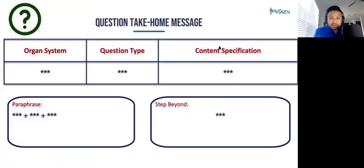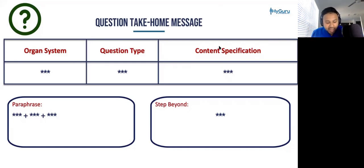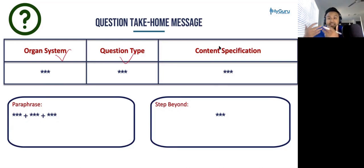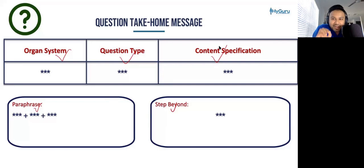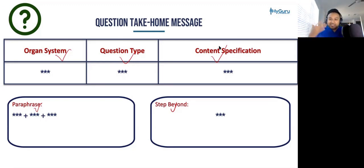Another key feature of the course is the question breakdown — right after the multiple choice question, we're going to do a question take-home message. I'm going to tell you which organ system this question relates to, whether it's a multimedia or psychiatry type question, the pharmacological mechanism, what the question was really testing you on, and a quick paraphrase of the vignette. Then I'll push your mind with an active recall 'step beyond' question that takes the concept to the next level.